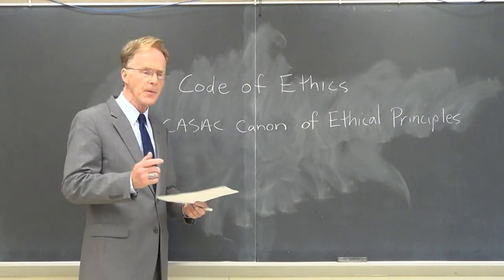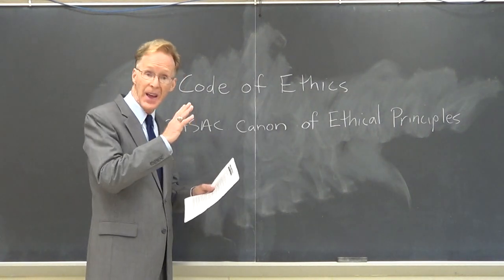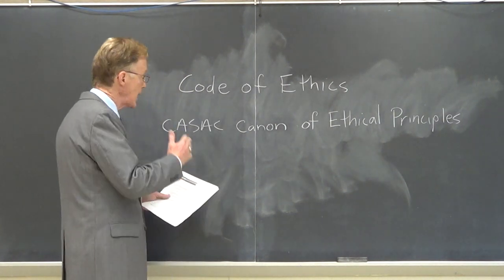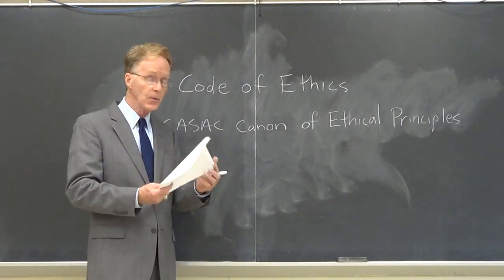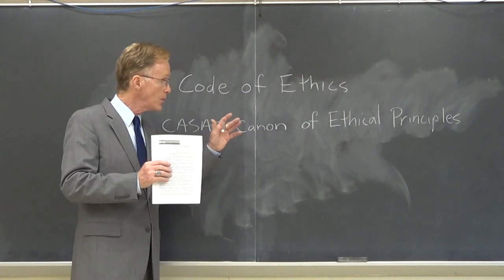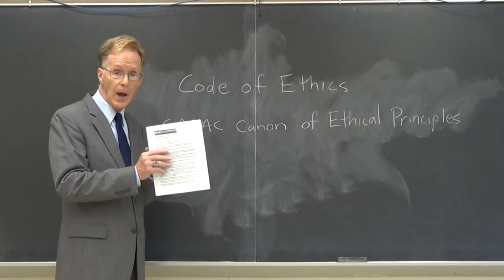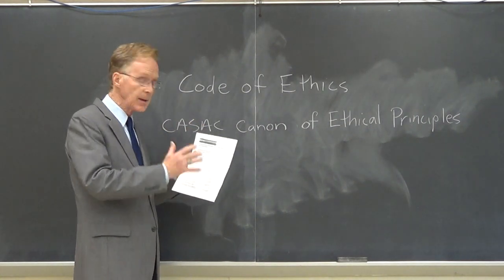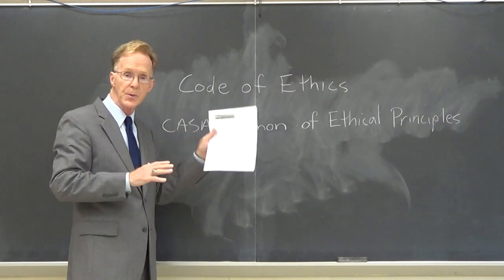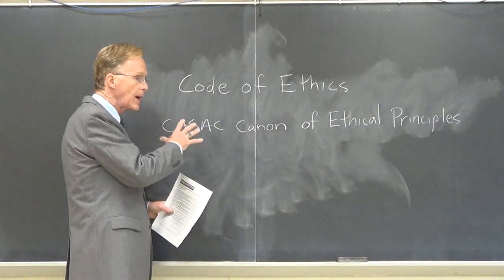We're picking it up from a code — a code of ethics, a written code, a written set of ethical principles that we are to follow. From Oasis, they've given us the canon of ethical principles. You should have this printed out in front of you. On the online course, there's printable reference material and these pages of the canon of ethical principles are there for you to look at, and we'll look at it together. So we have a code of ethical principles.